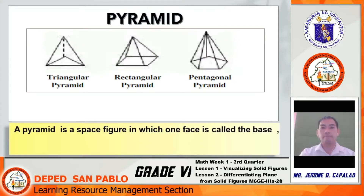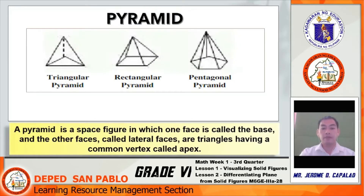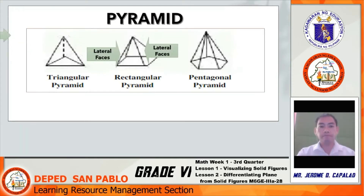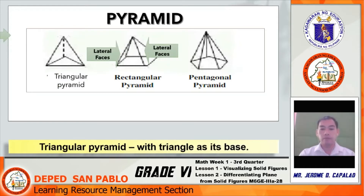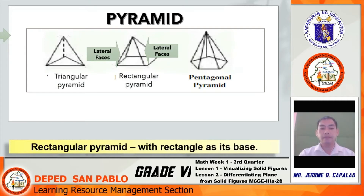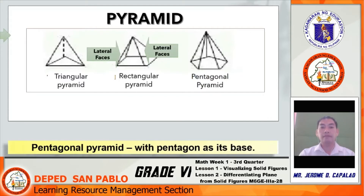Pyramid: it is a space figure in which one face is called the base, and the other faces, called lateral faces, are triangles having a common vertex called the apex. Types include: triangular pyramid (with triangle as its base), rectangular pyramid (with rectangle as its base), and pentagonal pyramid (with pentagon as its base).